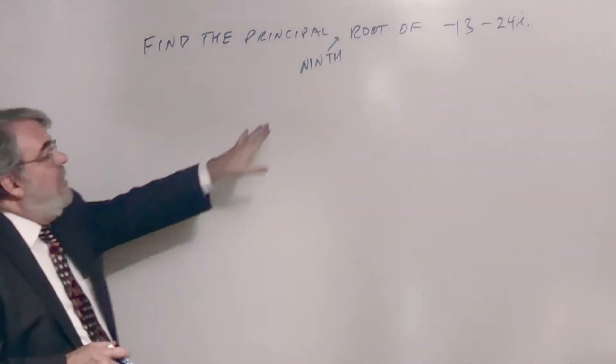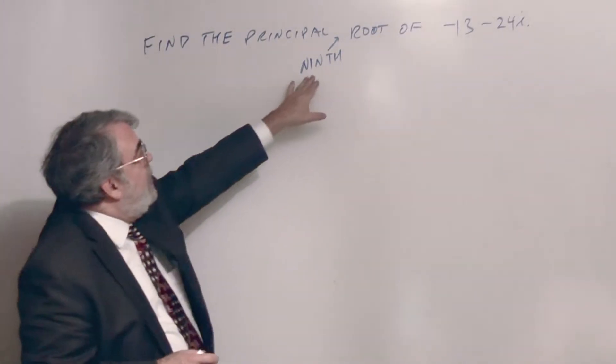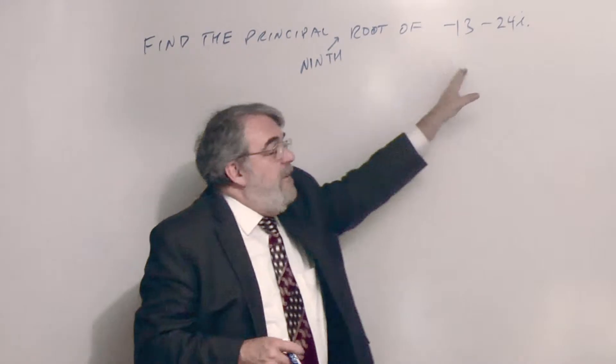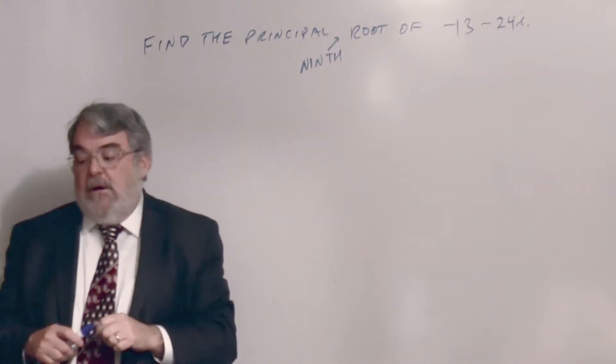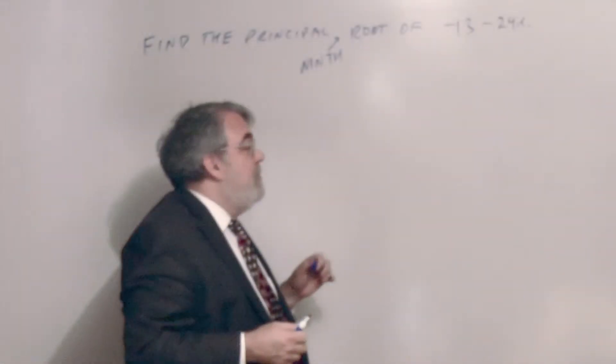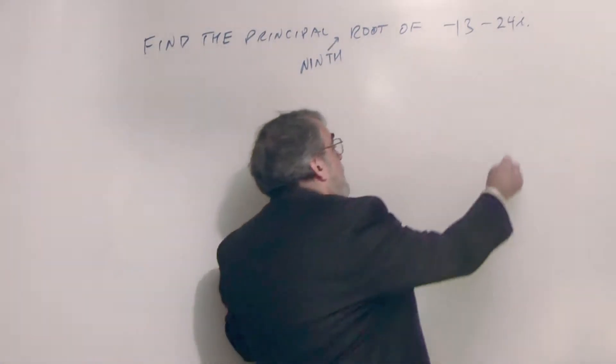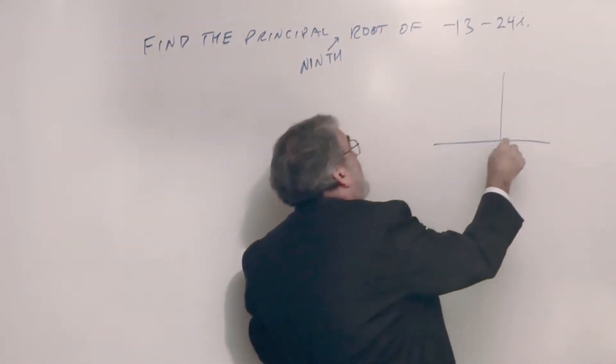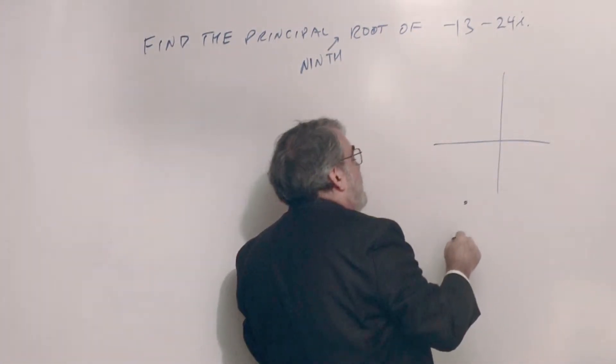Find the principal 9th root - I forgot to write 9th, so I squeezed it in - principal 9th root of negative 13 minus 24i. So it gives me a chance to remind you one more time to think about the quadrants. What quadrant is that in? It's the third quadrant, isn't it? It's where everything is negative. It's minus 13 minus 24i, it's down here somewhere.